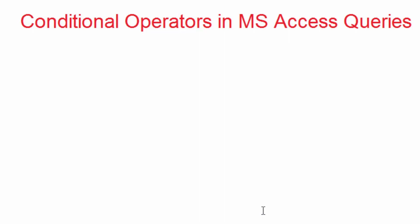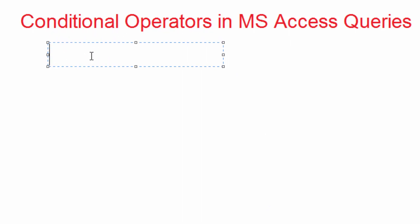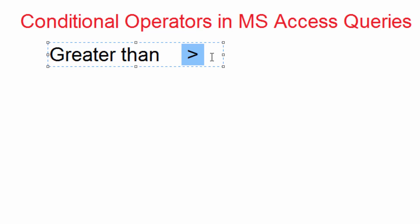I will show you a few of them. The first one is what we call greater than, and it is written with that bracket symbol. That is how we write the greater than sign in computers — even in mathematics it is the same symbol — and this one is used to compare two things.